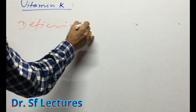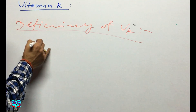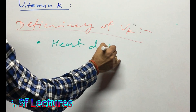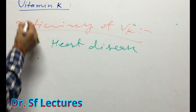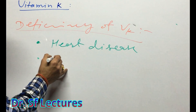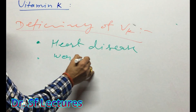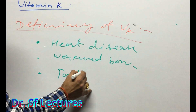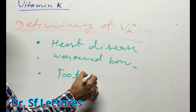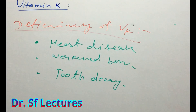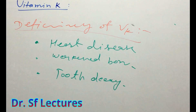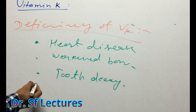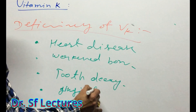What is the deficiency of Vitamin K? Vitamin K deficiency can cause weakness in bones — that is called weak bones. Vitamin K deficiency can also cause decay of teeth. A warning sign of Vitamin K deficiency is bleeding and bruising easily, like from the gums or nose.